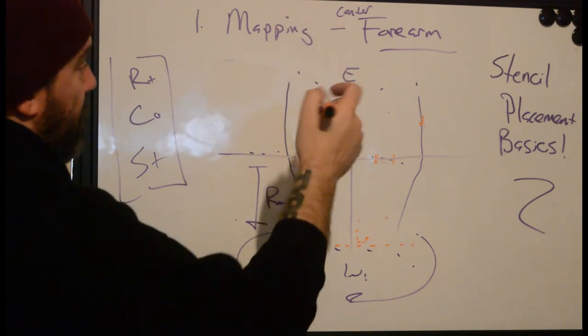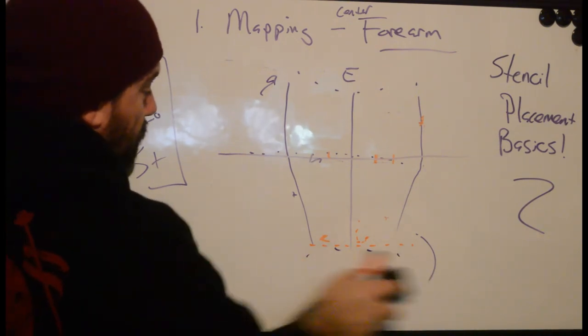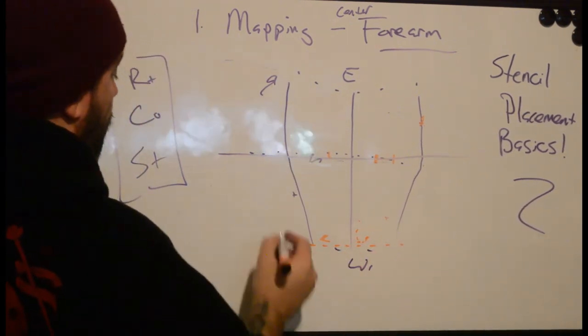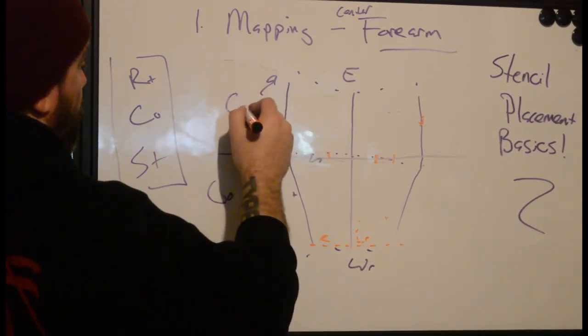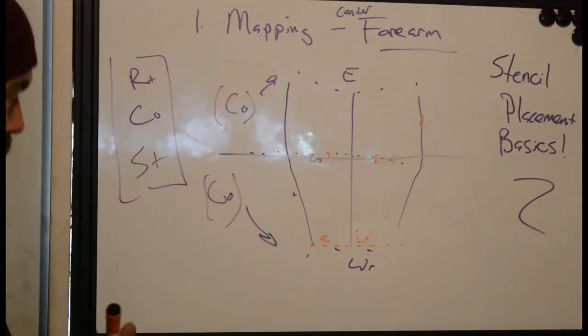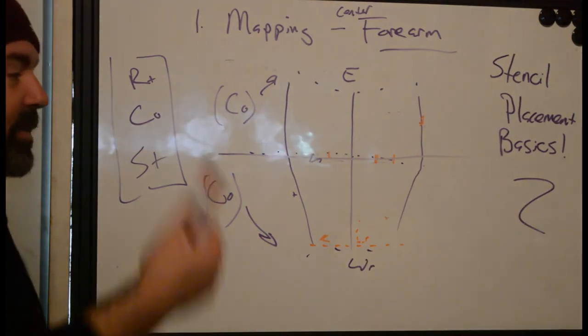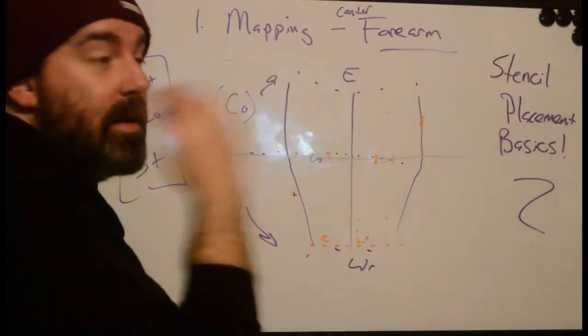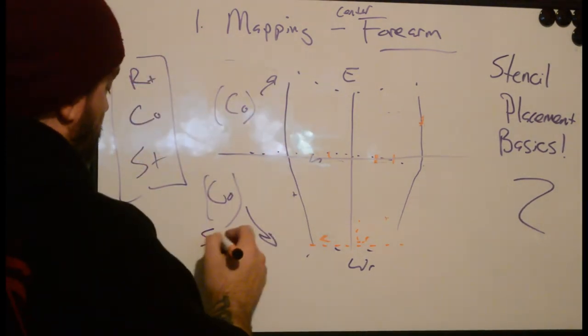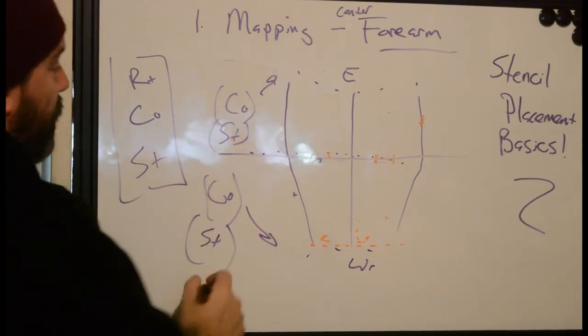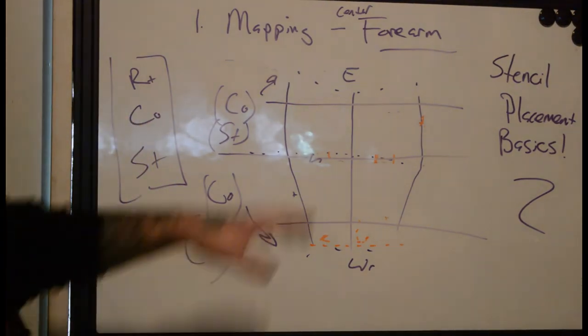As you get closer to the elbow and the wrist, we're going to get compressive stresses. When you get by the elbow, you bend, it closes. Same with down by the wrist. At the same time, because they open back up, depending on how that body is at rest when you place a stencil, you're also going to get that lengthening, the stretch. So you need to think about how your design is in relation to those elbow and wrist areas when you're actually doing the application.